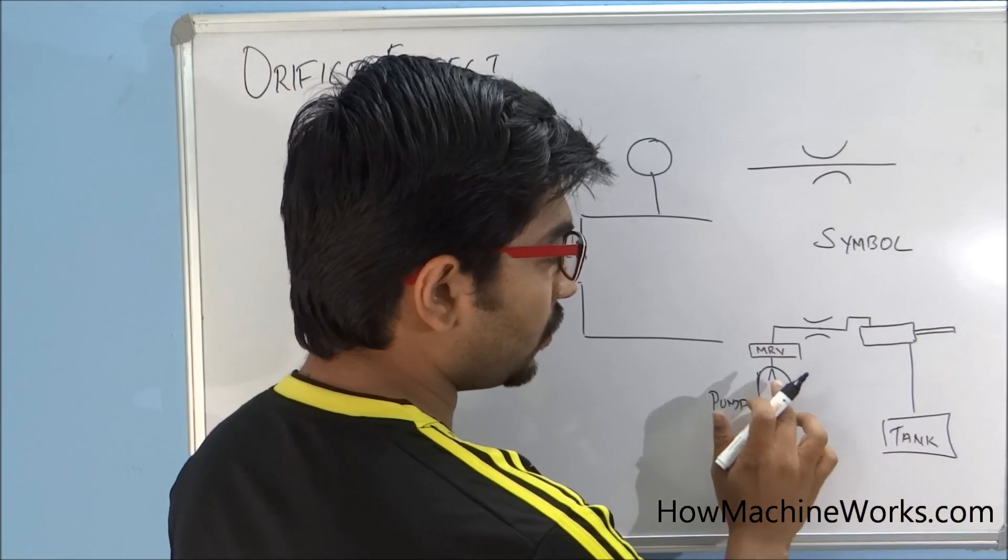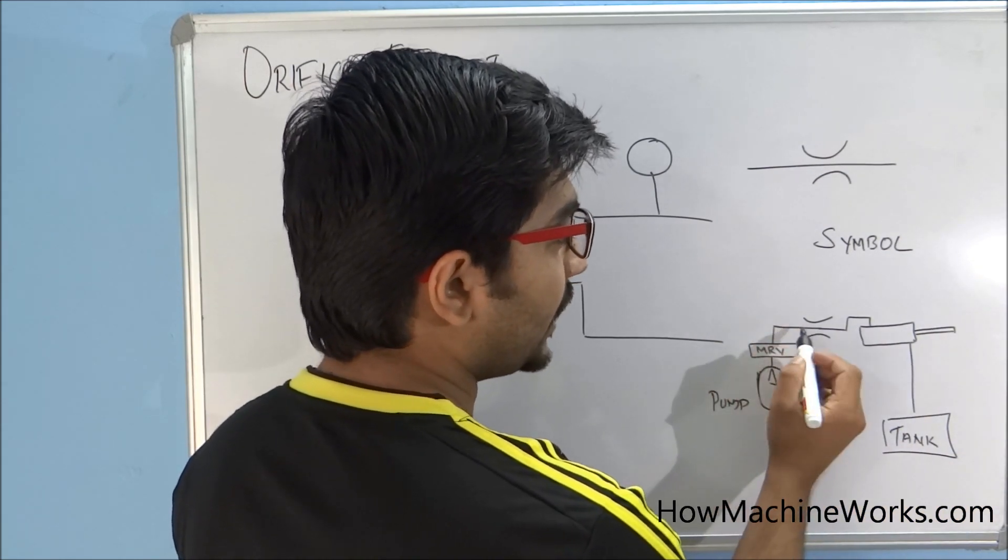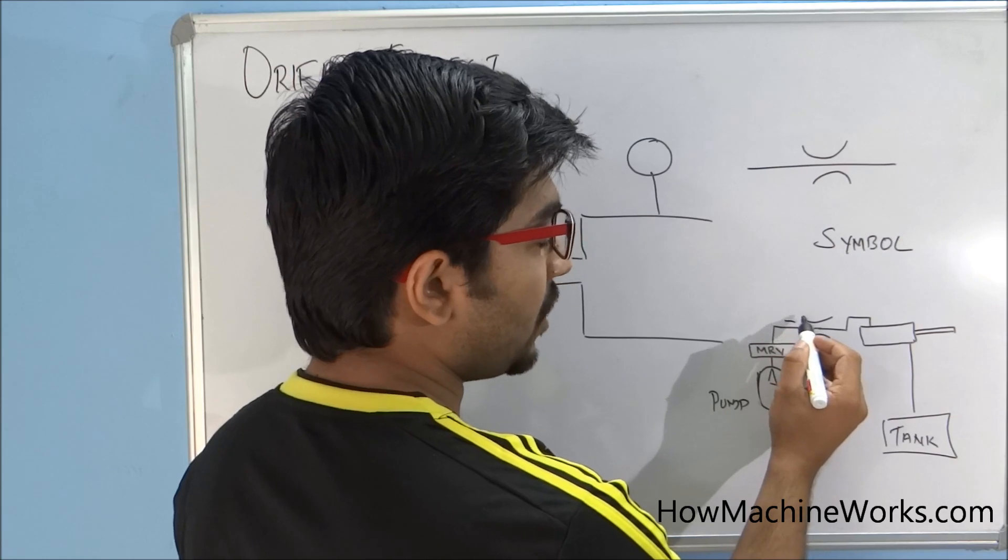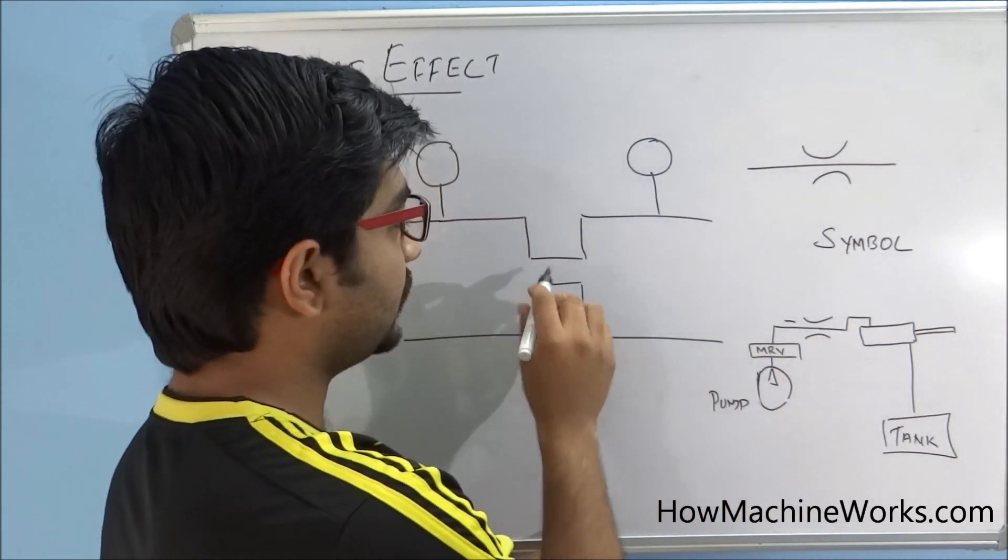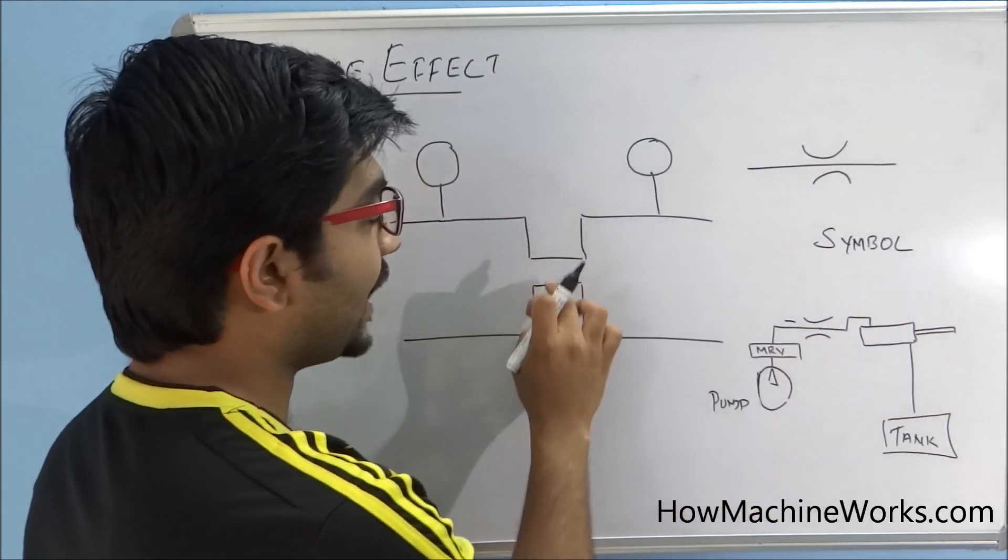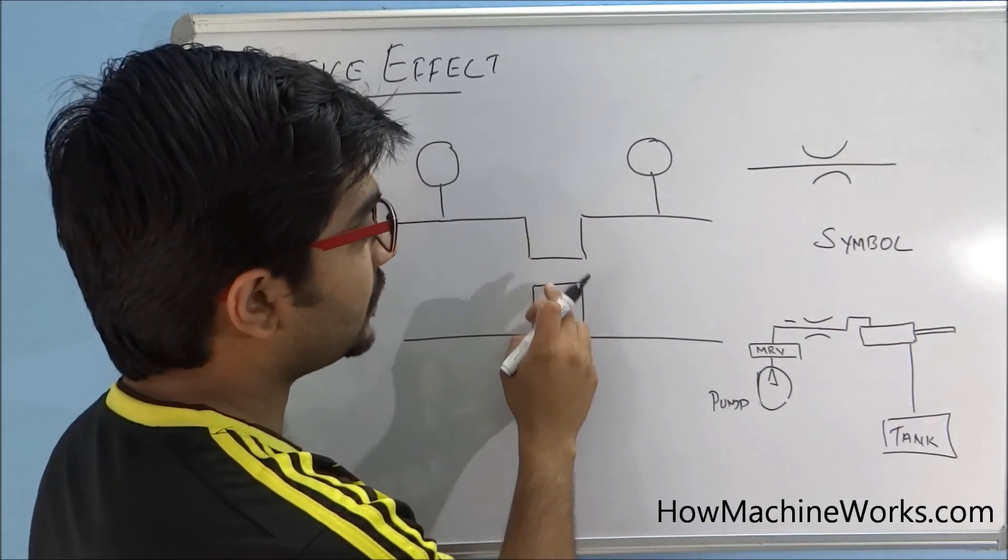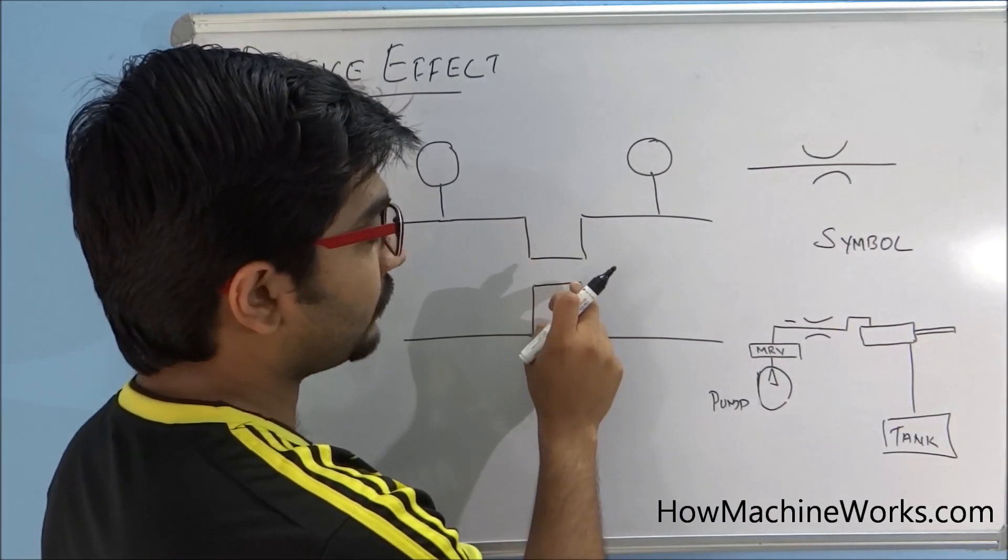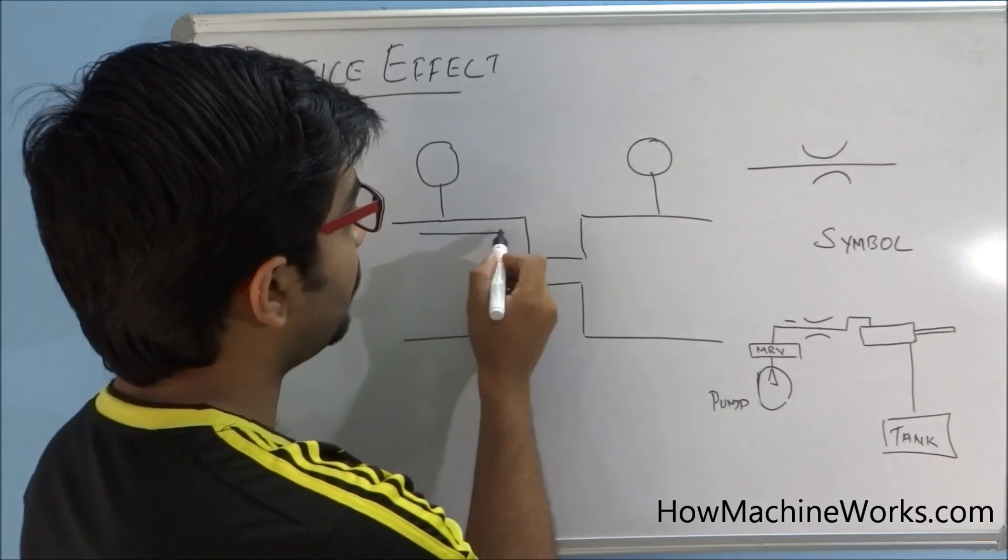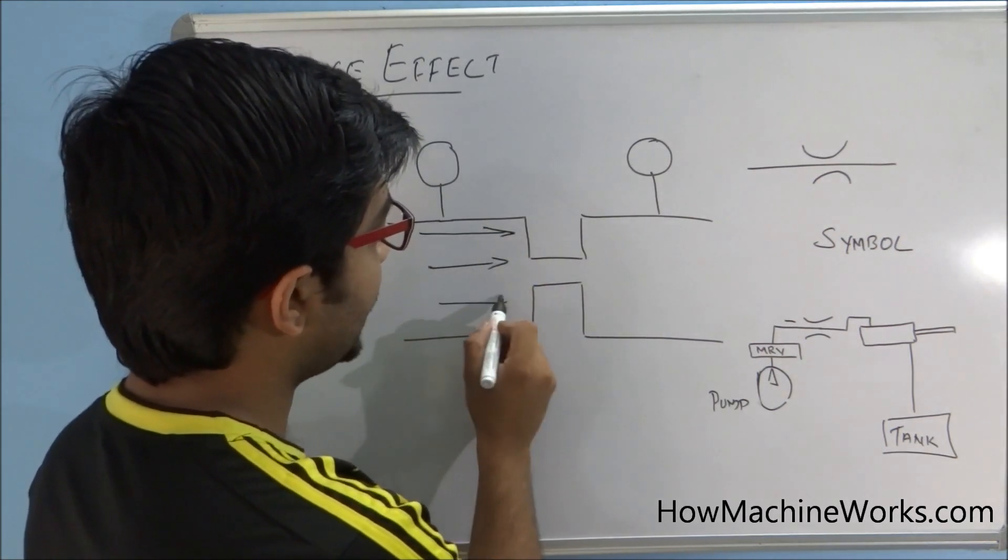The oil comes over here and at this area the pressure will increase, because orifice is something like this - there will be a lesser diameter at the orifice. That means the area of flow is getting restricted or getting reduced. So we have more flow coming here like this, and at this point the flow is getting restricted.